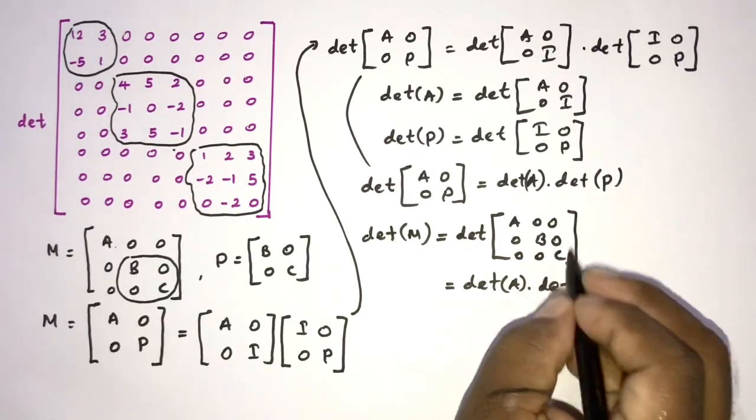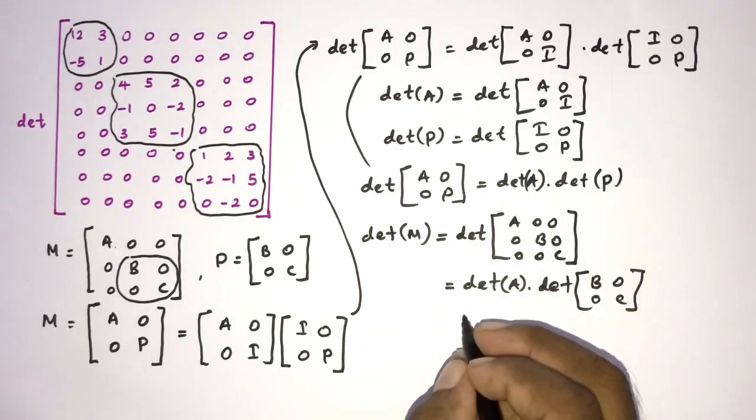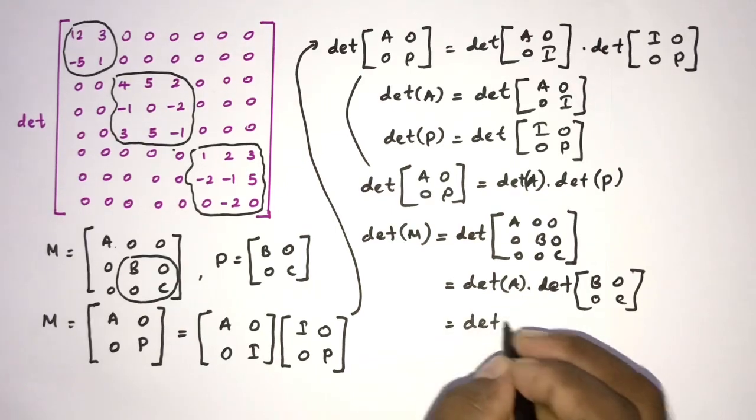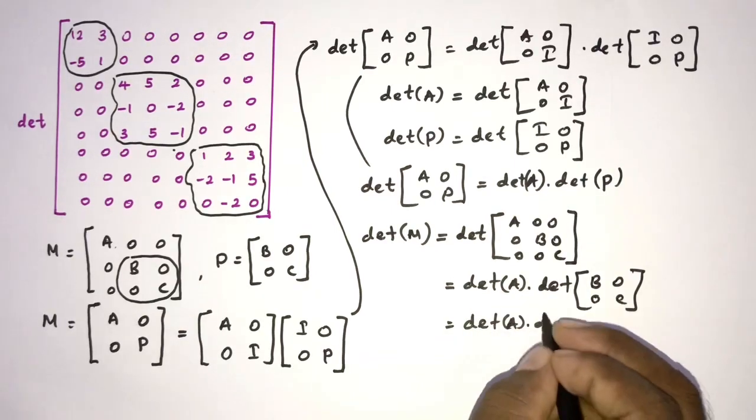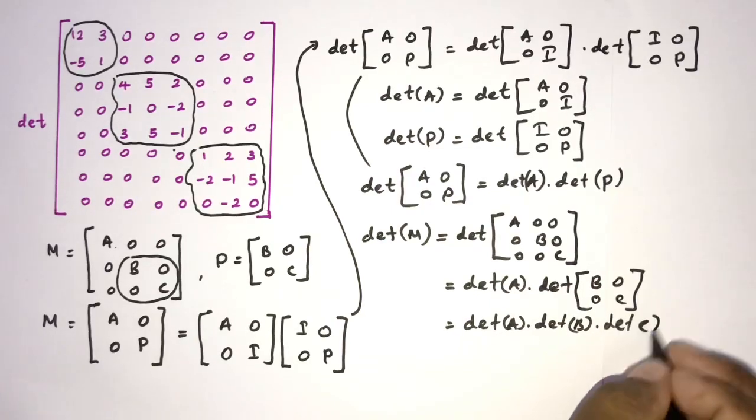And also we can write this is equal to det of A times det of here B, 0, 0, C. And again according to this we can write this is equal to det of A, determinant of B, determinant of C.